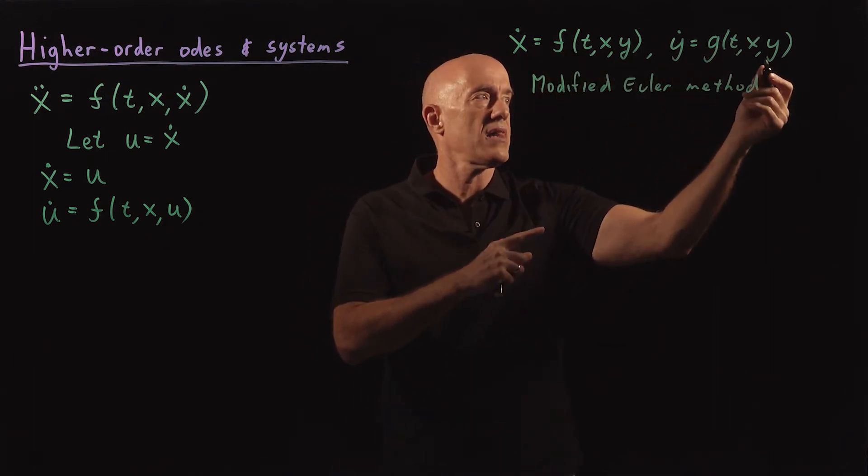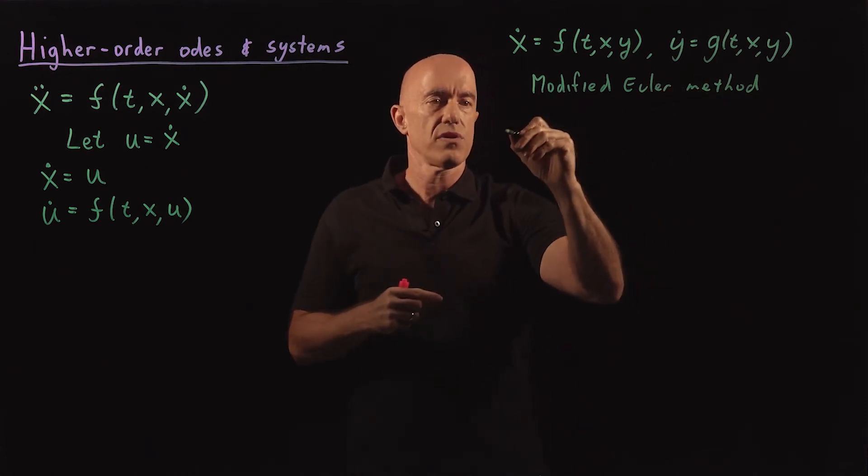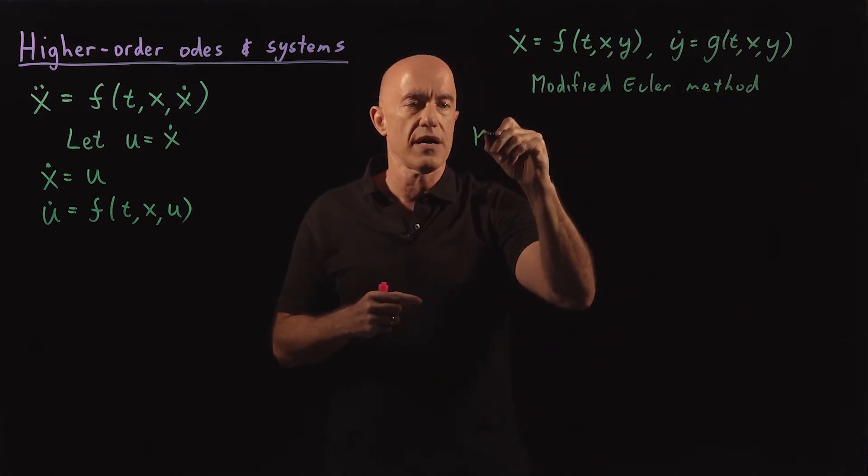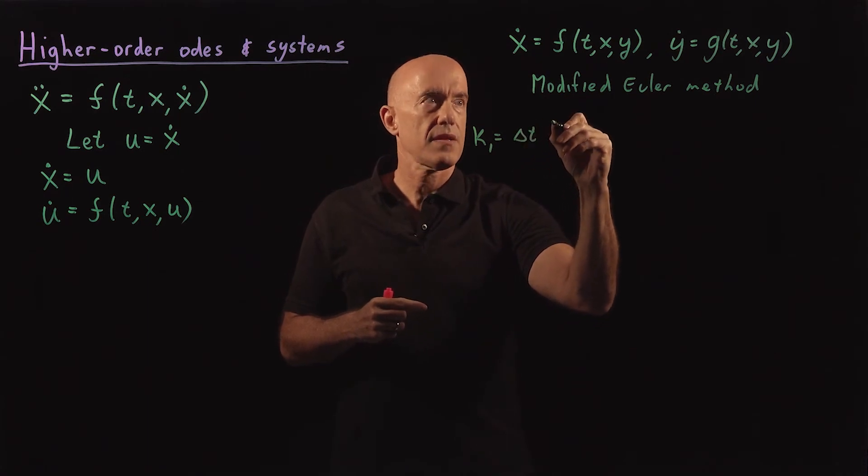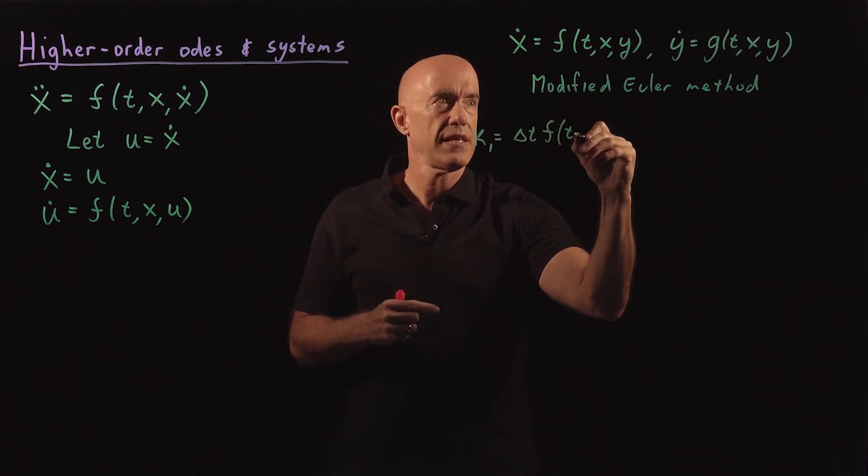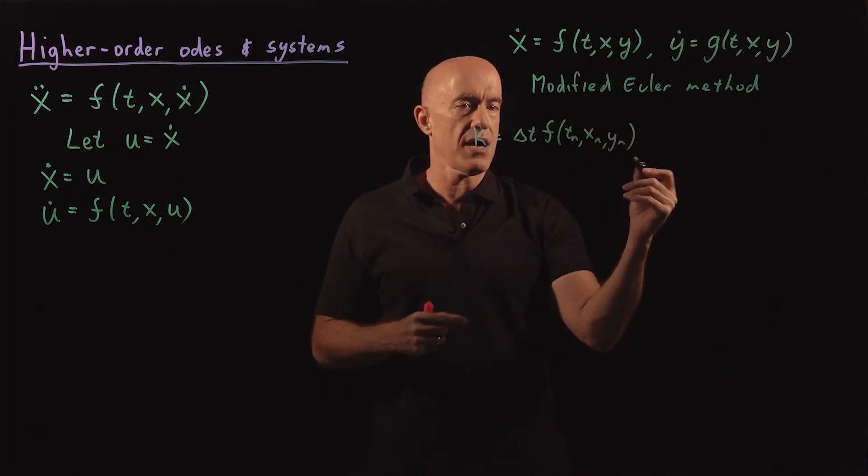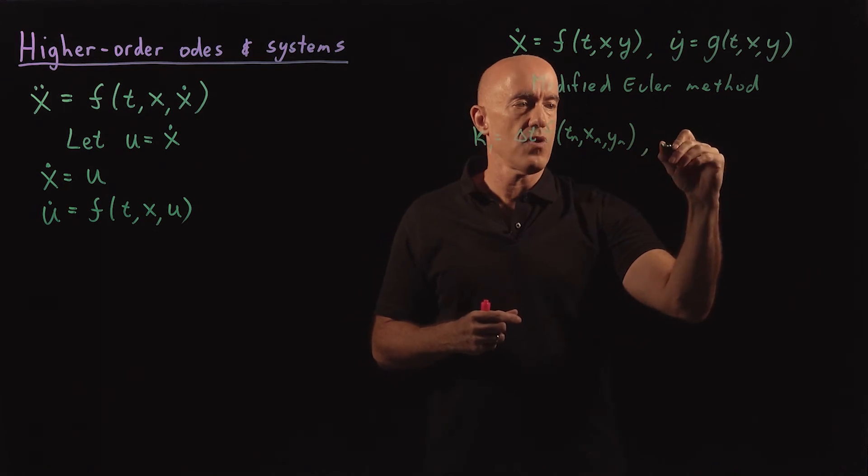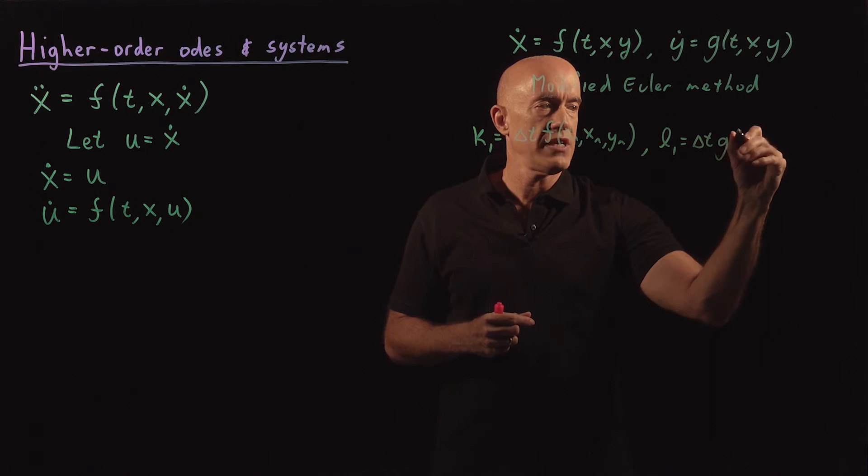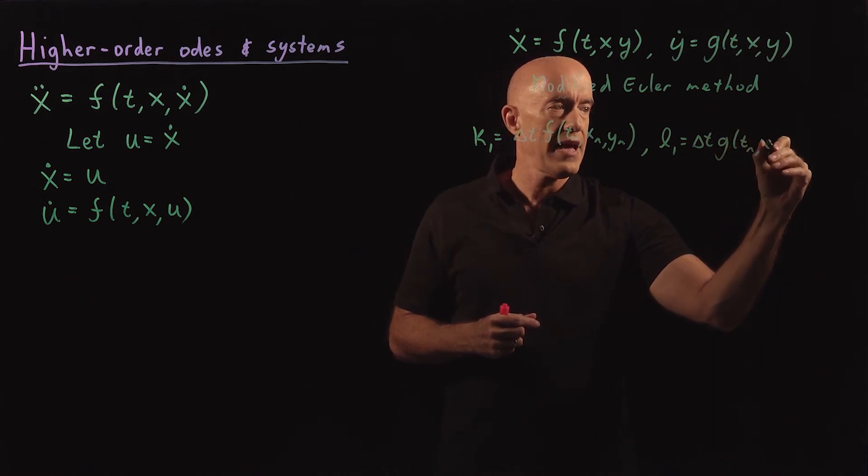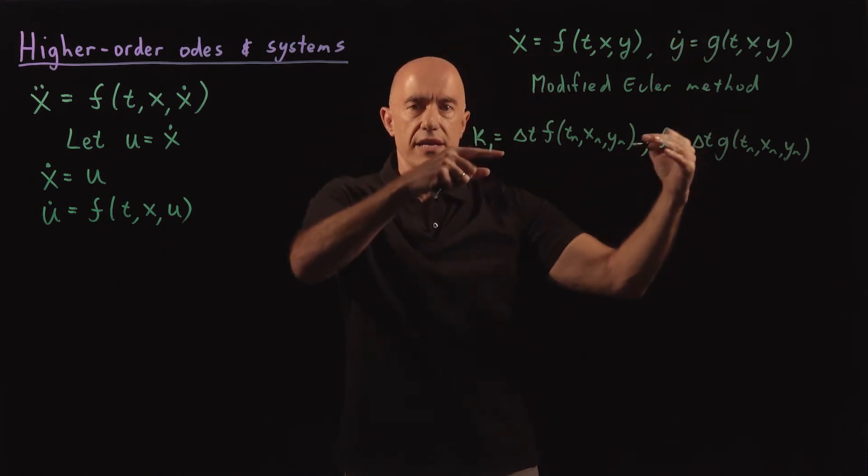So we can use K for the stages for integrating x, and we can use L for the stages for integrating y. So we could write K1 equals delta t times f of tn, xn, yn. And at the same time, we would write L1 equals delta t times g of tn, xn, yn. So we're going to integrate in parallel.